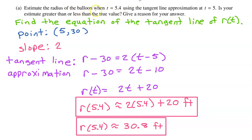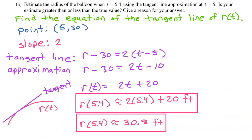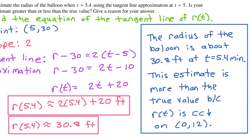They also want us to state whether the estimate is greater or less than the true value and justify. The key is that the graph of r is concave down on the interval from 0 to 12. If r(t) is concave down, the tangent line will always be greater than or equal to r(t). So this estimate of 30.8 feet is more than the true value because r(t) is concave down on the interval from 0 to 12.